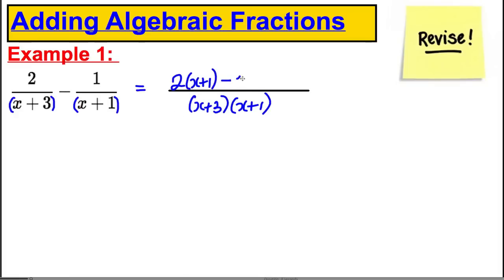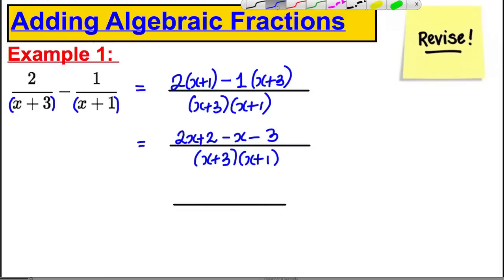Keep your subtract. This one here, keep that. For this to have an x plus three on the bottom it must have been multiplied by x plus three. And now all we need to do is expand the top very carefully making sure we use the distributive property of multiplication. So this is 2x plus two and this here would be subtract x and subtract three all over x plus three, x plus one. And lastly now we should just tidy up the top and we would have our final answer.